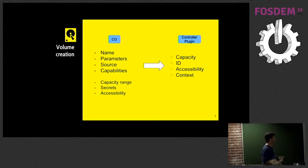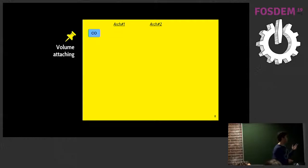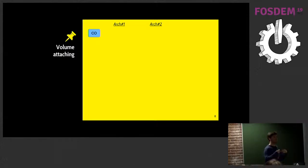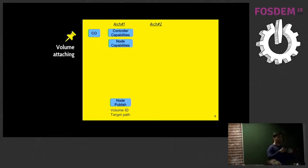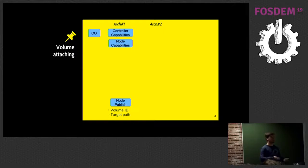For a more complex flow, we have the attach/detach operation. If you read the CSI spec, you'll find they don't talk about attaching and detaching — they talk about publishing and unpublishing volumes. First we'll see a flow in Architecture 1, where every single node can access the backend. The orchestrator calls the CSI plugin first to check capabilities and confirms every node can access the backend. So it immediately goes to the node where it's going to create the container and tells it: please publish this specific volume and make it available on this target. And then that's it — it is exposed. It is the node publish obligation to make it accessible on a specific target.